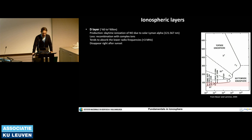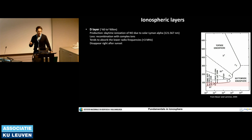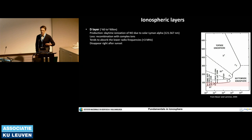The D layer is located at about 60 to 90 km. The production mechanism is mainly the daytime ionization of NO due to solar Lyman-alpha at that specific wavelength. The loss is due to recombination with complex ions. It has the characteristic of absorbing lower radio frequencies — so ground-based instruments called ionosondes cannot detect the D layer. It disappears right after sunset because recombination is completely able to make the layer vanish.